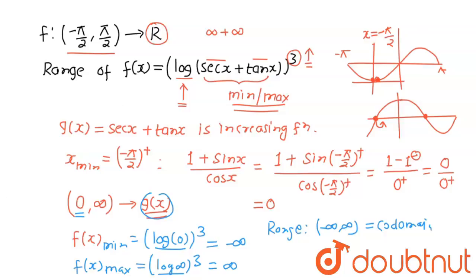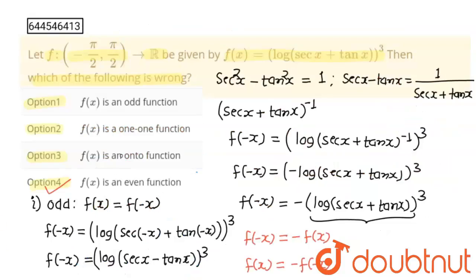So the given function is one-one, onto, and an odd function. Therefore the only wrong statement among the options is option 4, which claims the function is even. Thank you, students.